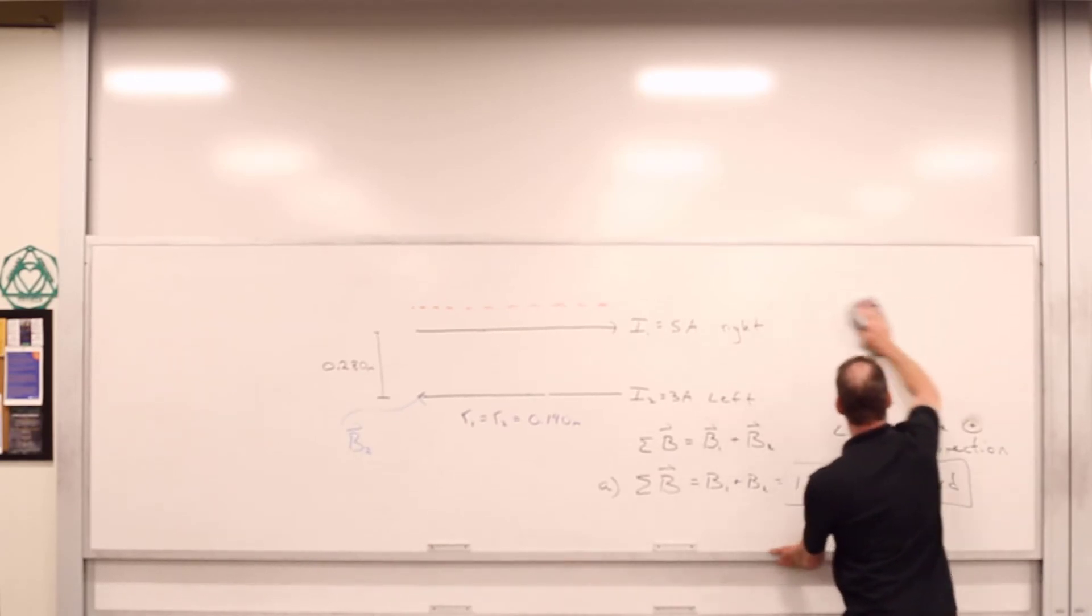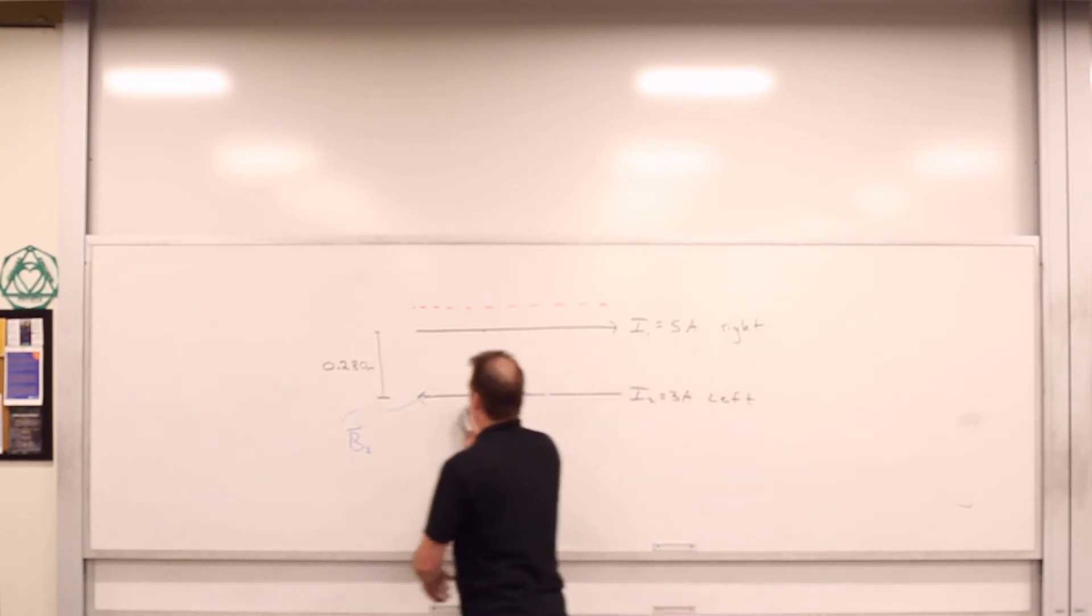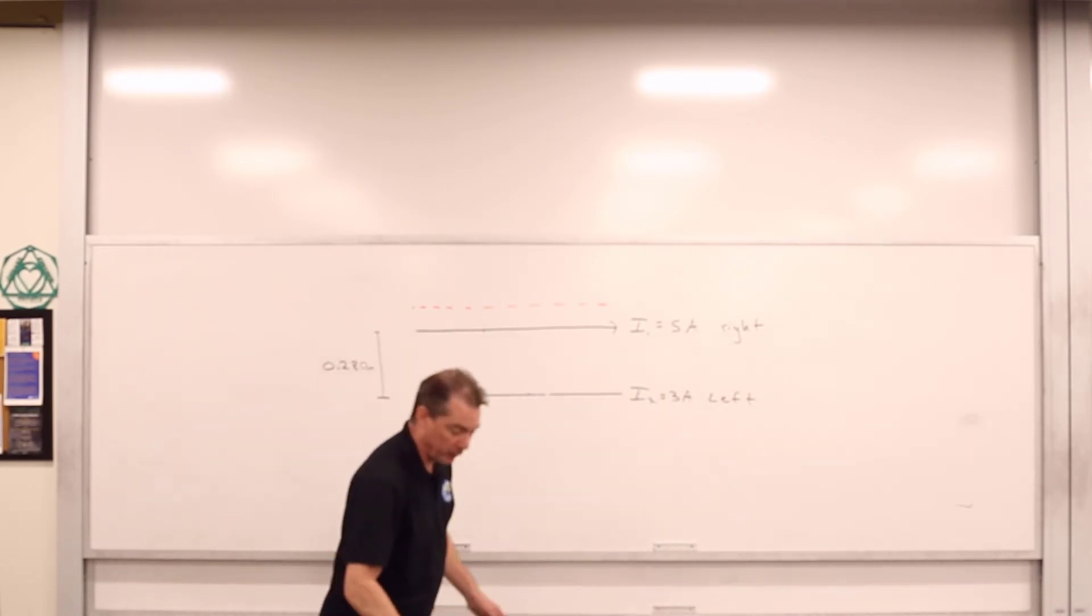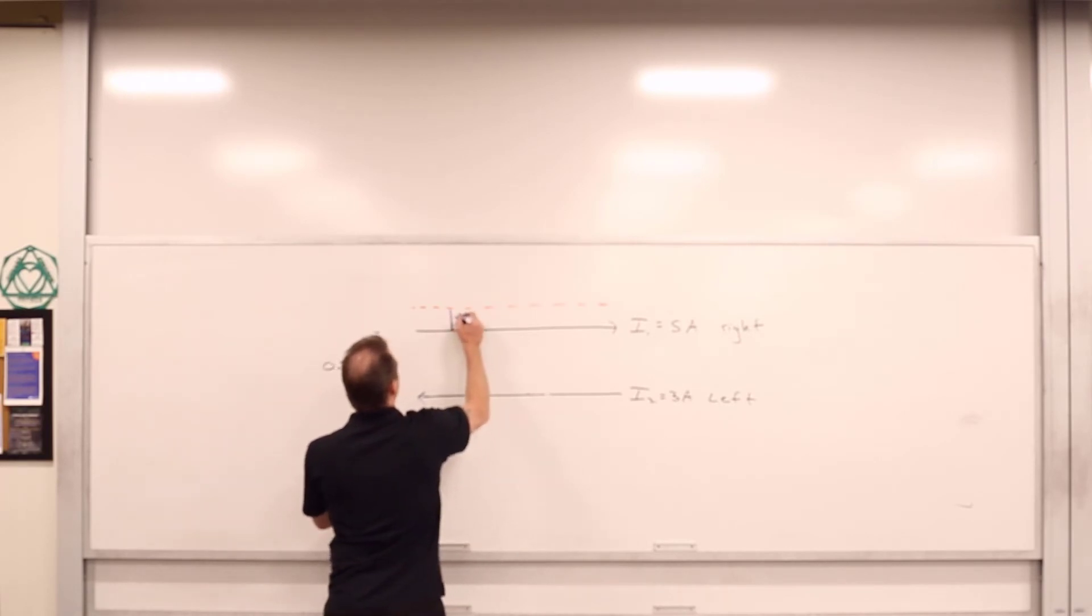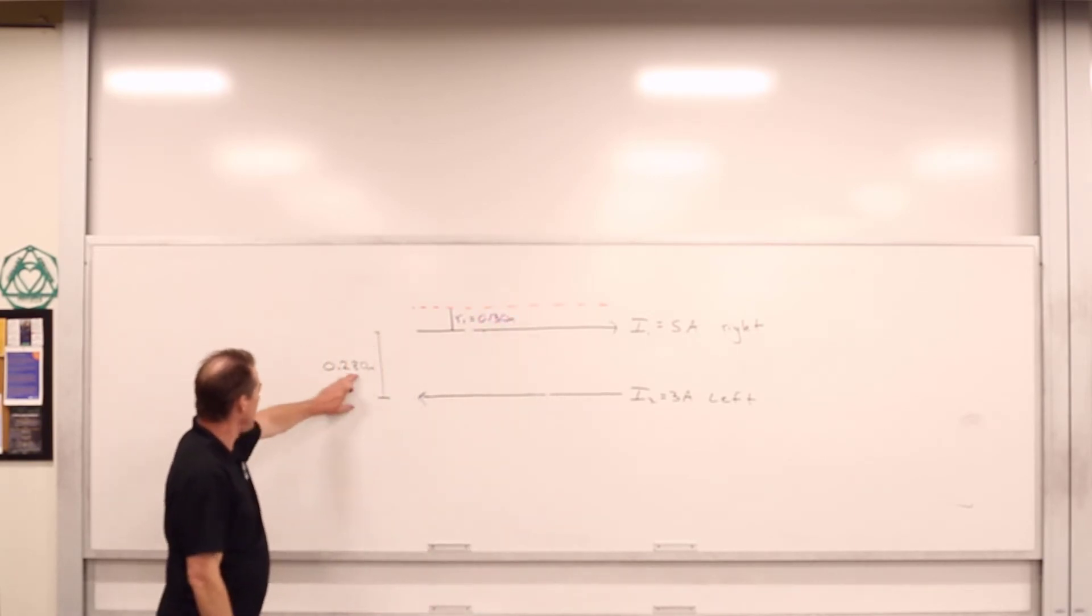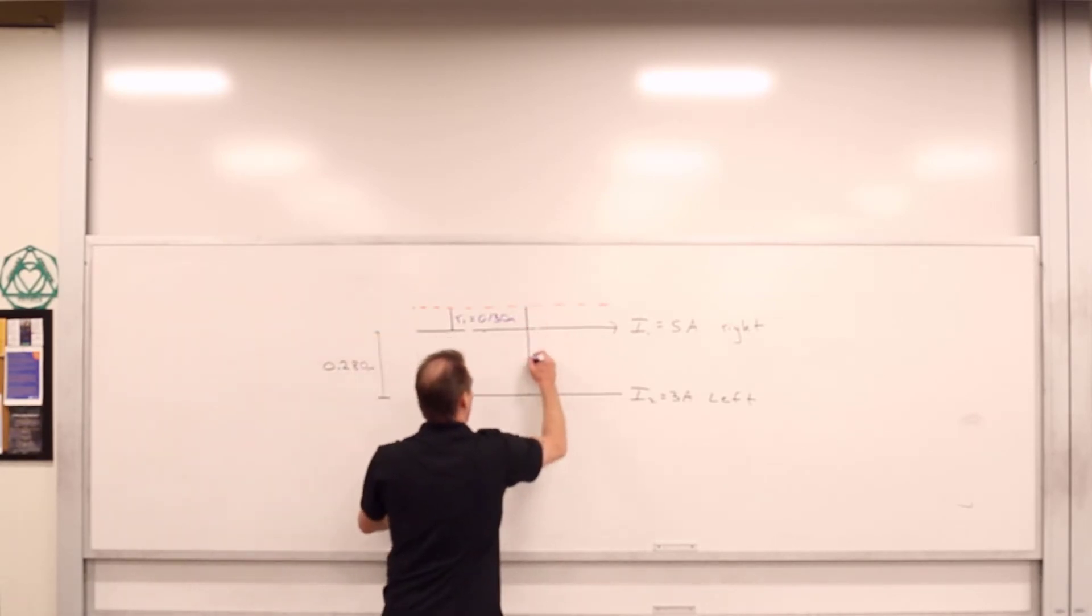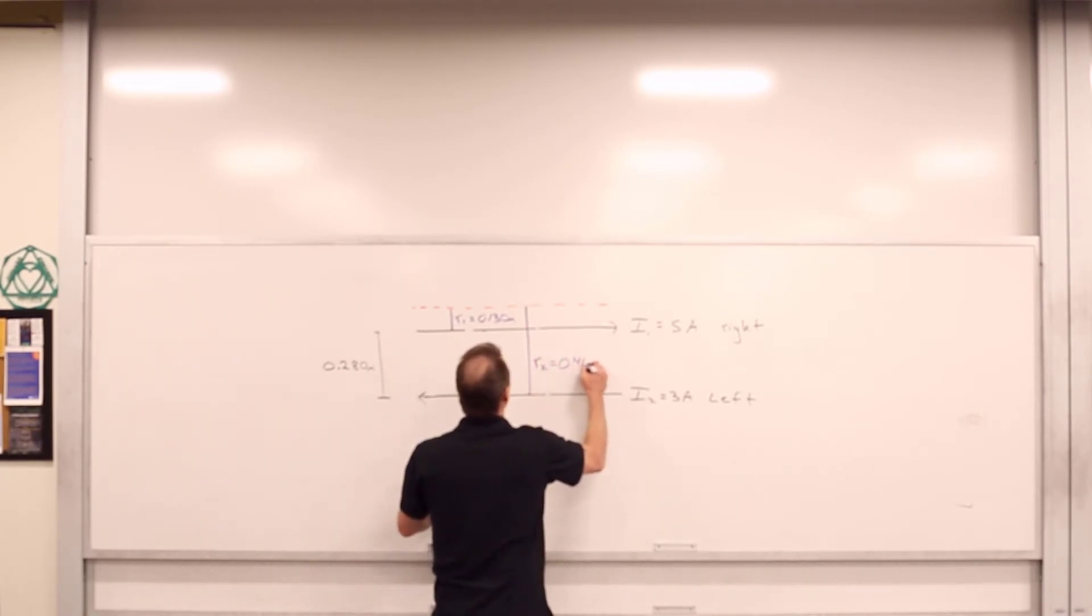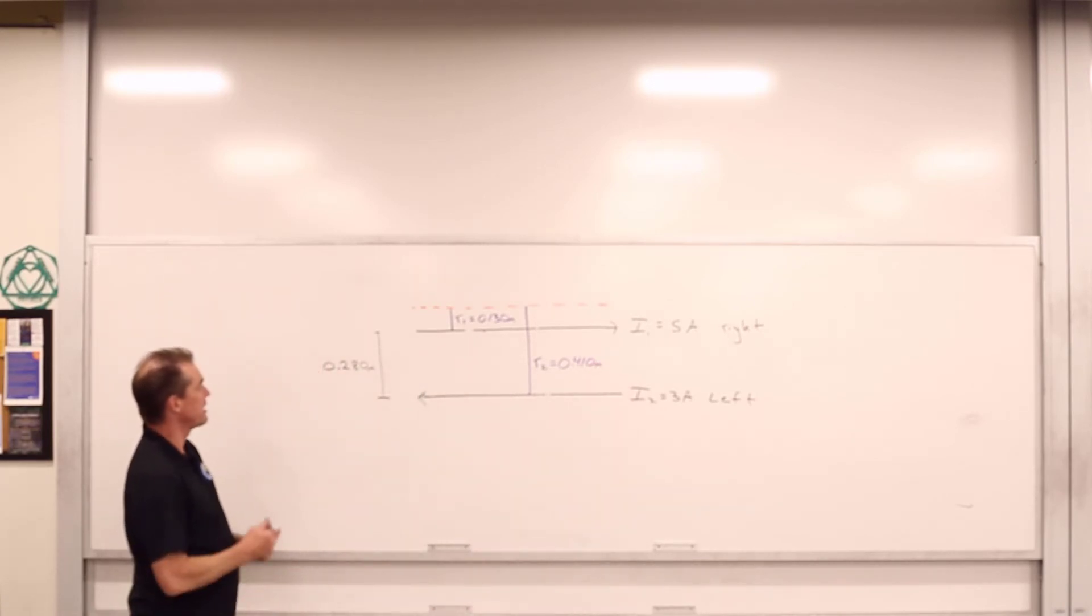Erase this, erase that, erase that, erase that, and erase all this. Want to know what the field is up here? We've got ourselves some distances. We've got ourselves R1 is going to be equal to 0.130 meters. And then we've got R2 is going to be this quantity plus the 0.013 meters. R2 here, R2 is going to be equal to 0.410 meters. So there we go. We've got our two distances away.